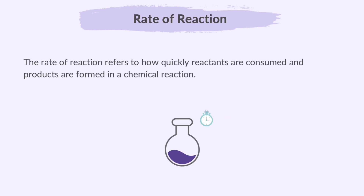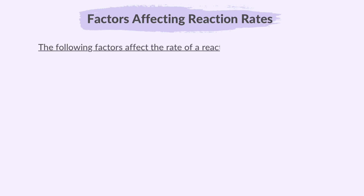The rate of reaction refers to how quickly reactants are consumed and products are formed in a chemical reaction. In simpler terms, it's a measure of how fast or slow a reaction occurs. The following factors affect the rate of reaction.